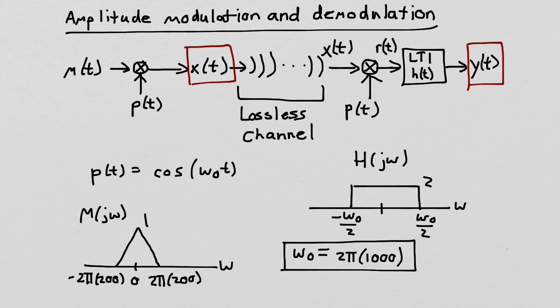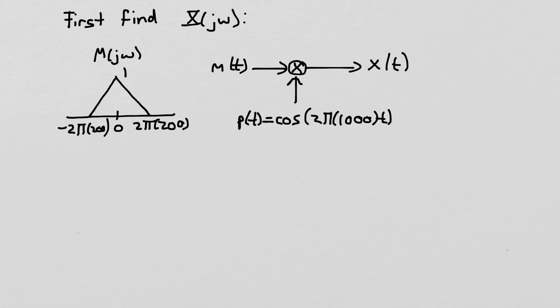These are the parameters of the example. We're going to solve for the spectrum x of j omega and then the spectrum y of j omega. The key is our multiplication property — also called the modulation property. When we multiply two signals together in the time domain, we convolve their frequency responses. So why don't you pause the video and try to solve for x of j omega yourself, and then I'll go through the solution.